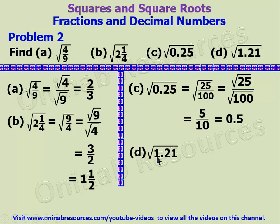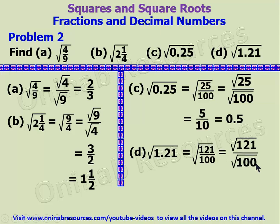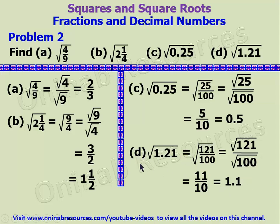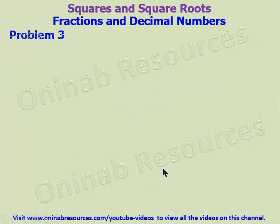For D, in the same way, the square root of 1.21 will be written as the square root of 121 over 100, which gives the square root of 121 over the square root of 100. The square root of 121 is 11, over 10 which is the square root of 100. Expressing this as a decimal, since we have 10 here, 11 will be expressed as one decimal place. So we have 1.1. That is the solution of problem 2D, and the end of problem 2.